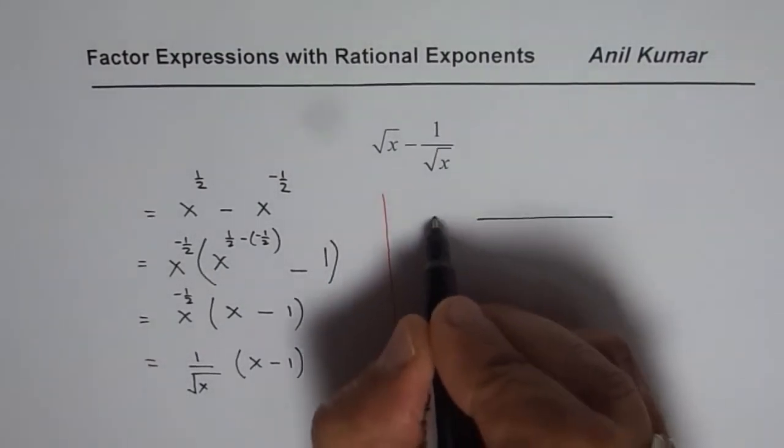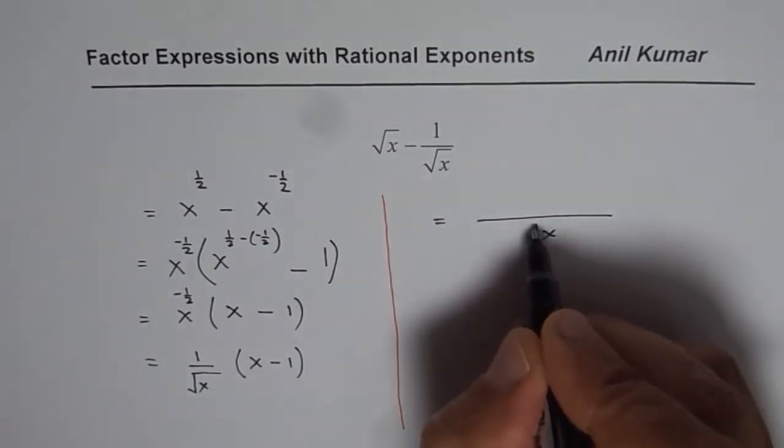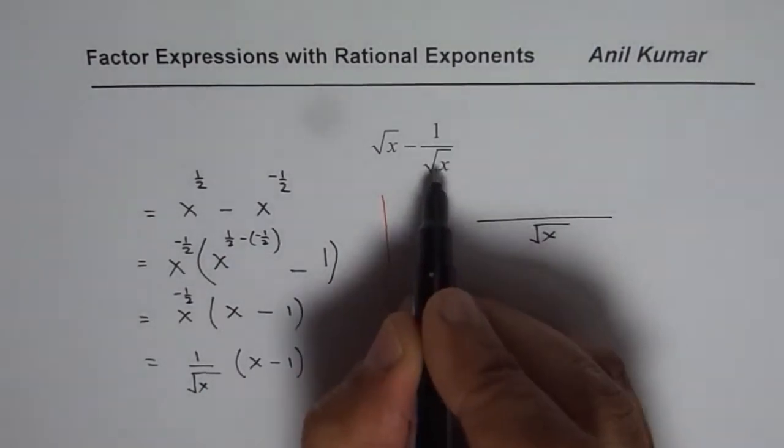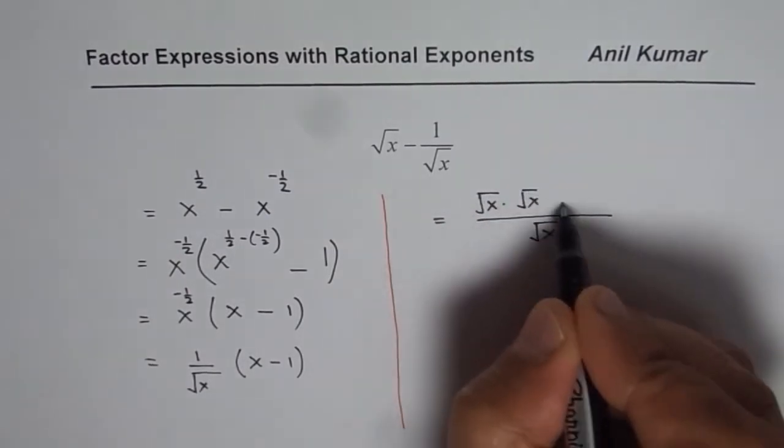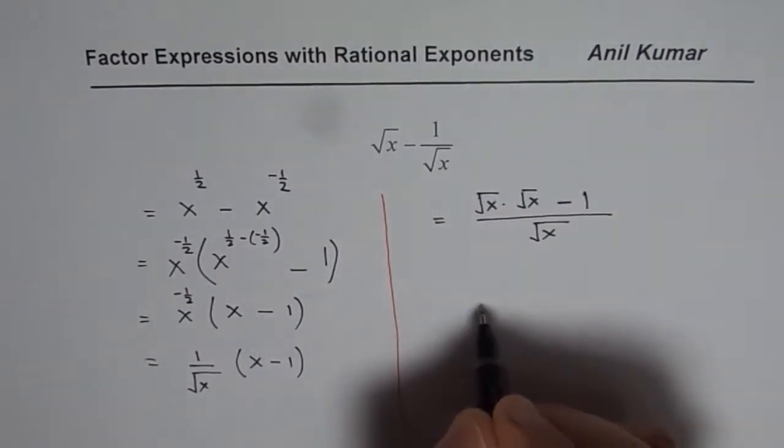So the same expression could be written as square root of x is a common denominator. Then what do you get here? You get square root of x times square root of x minus 1.